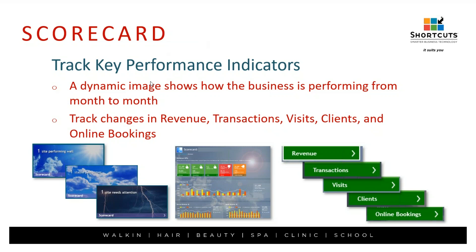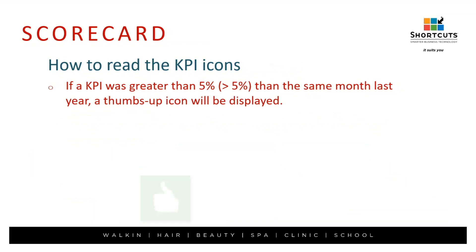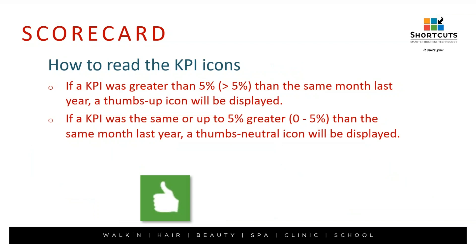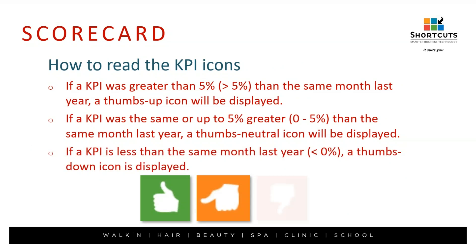What does the scorecard actually look like and how do you read the icons? In the scorecard, you're going to have a thumbs up button, a thumb sideways button, or a thumb down button. This shows you your KPIs — your key performance indicators. For online bookings, for example, if you had greater than 5% growth that month, you get a thumbs up. If it was up to 5% — really no change — you get that sideways orange button. If your key performance was less than the same month last year, it's going to be negative, or thumbs down. So it's showing you how the trend is going from month to month and year to year.